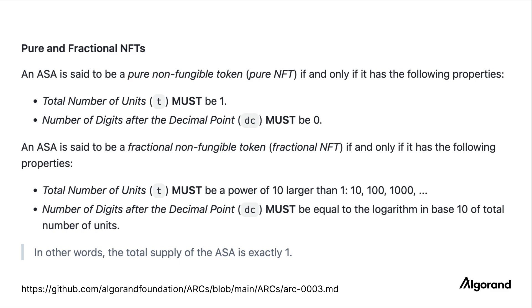According to ARC3, which is the standard for NFTs on Algorand, both pure and fractional NFT's total supply has to be exactly 1. So if you want to create a fractional NFT, the total field must be a power of 10, and the decimals field must be equal to the logarithm in base 10 of the total field.